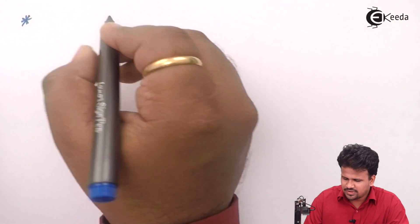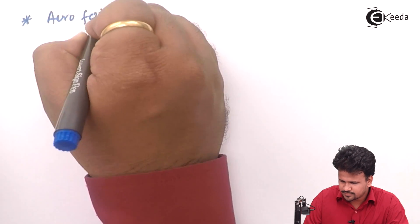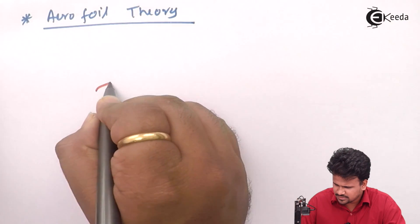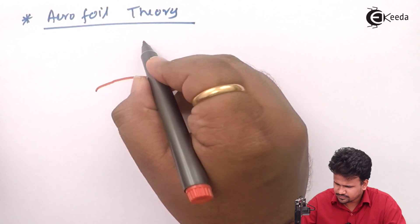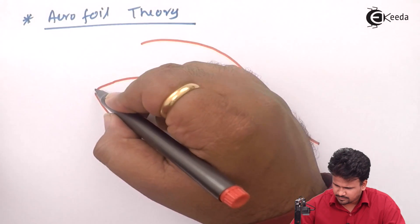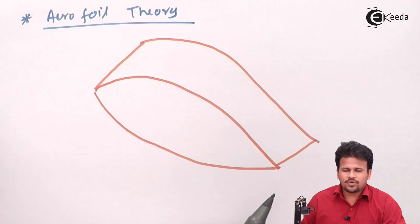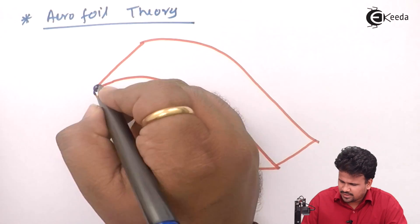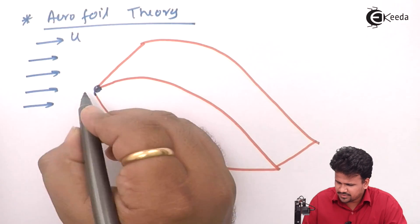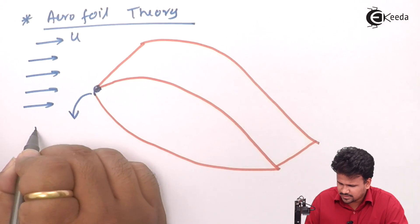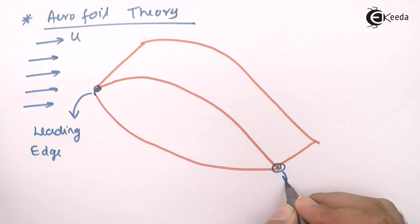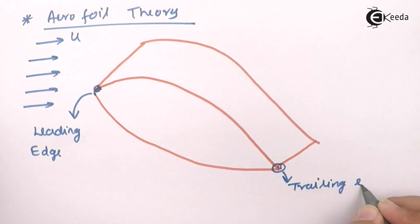Let us get to the geometry of an aerofoil. We have to learn how an aerofoil is made. If we consider this aerofoil and consider the wind velocity acting on it, the initial part of the aerofoil that faces the incoming flow is called the leading edge.